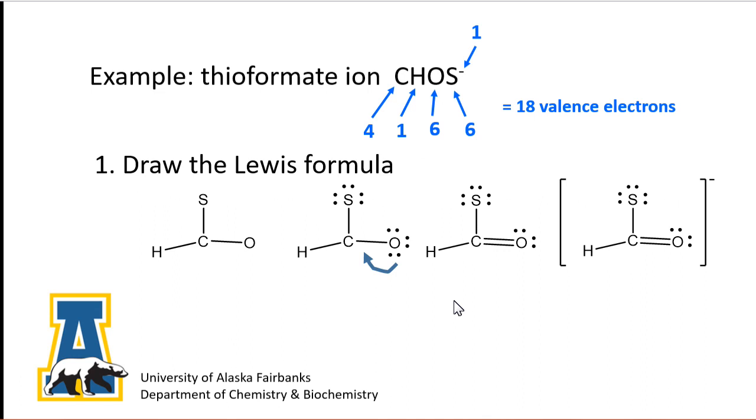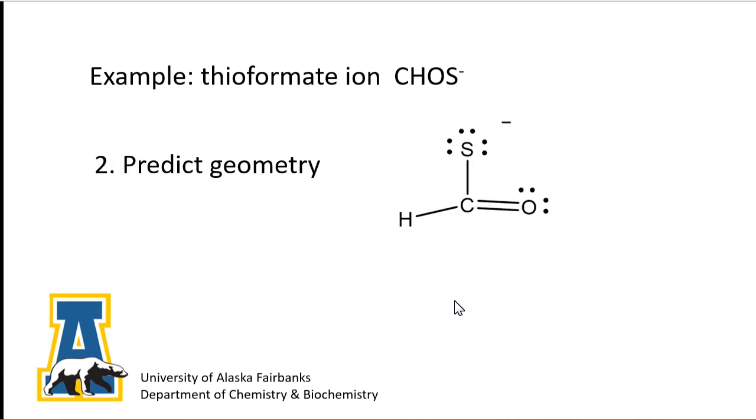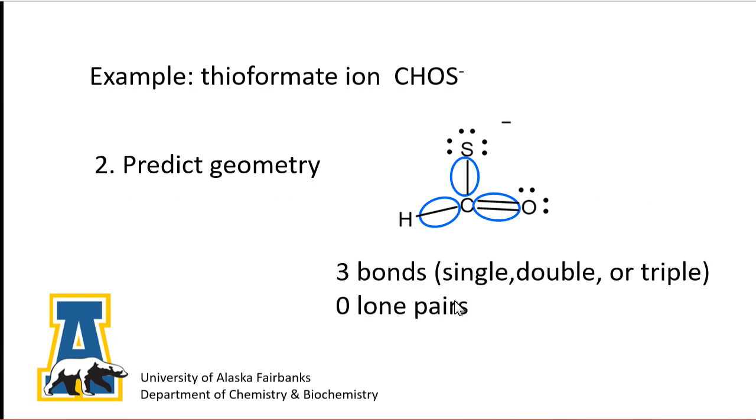Now, around carbon, the Lewis formula shows 3 bonds: single, double or triple, and 0 lone pairs. VSEPR predicts a trigonal planar molecular geometry.